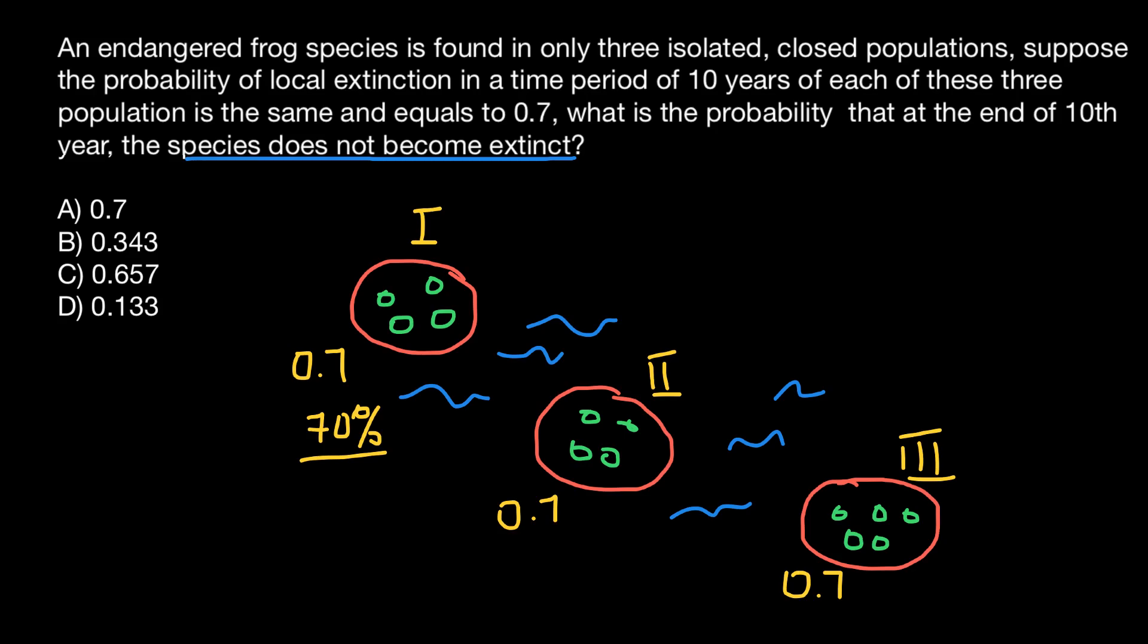For example, probability that on the island number one they would go extinct is 0.7. Probability that they would go extinct on the island number two also is 0.7.